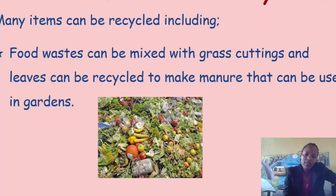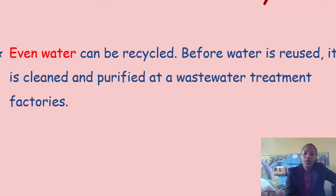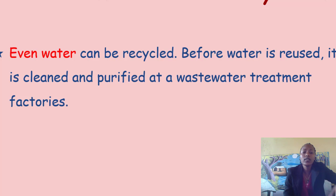And in the gardens, we have the plants. An example of plants we have in the gardens is vegetables. When we put manure, the plants grow healthy. Even water can be recycled. Before water is reused, it is cleaned and purified at wastewater treatment factories.